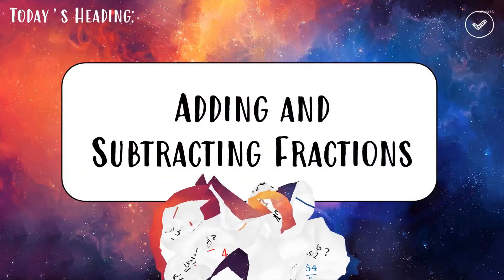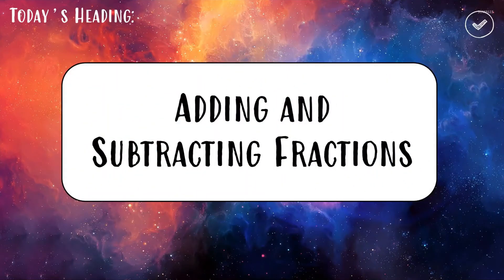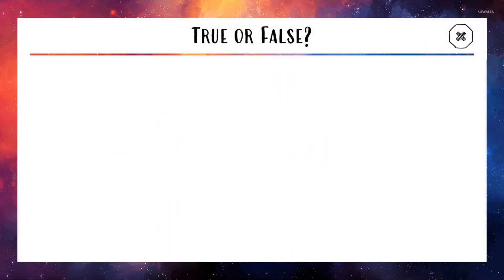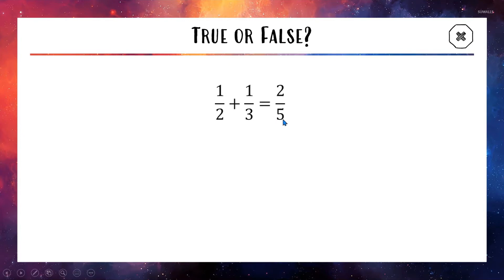Today's lesson is all about adding and subtracting fractions — a really important lesson. We're starting with a true or false question: is 1 over 2 plus 1 over 3 equal to 2 out of 5? A lot of Year 7 students who are new to fractions will say yes, because 1 plus 1 is 2 and 2 plus 3 is 5, so it all seems to make sense.